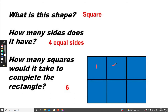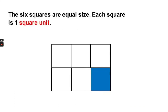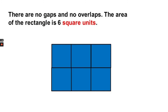One, two, three, four, five, six. The six squares are all equal in size. Each square is one square unit. There are no gaps and no overlap. The area of the rectangle is six square units.